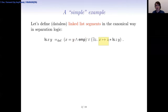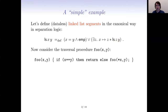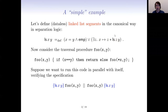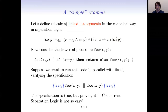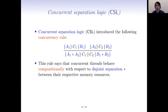I'll use a running example with a linked list: pointer x maps to z, and separately there's a tail list segment from z to y. Consider traversal procedure foo, which chases next pointers until it reaches guard value y — it doesn't modify memory at all. We want to run this code in parallel with itself, verifying that if we start with a list segment from x to y, afterwards we still have a list segment from x to y.